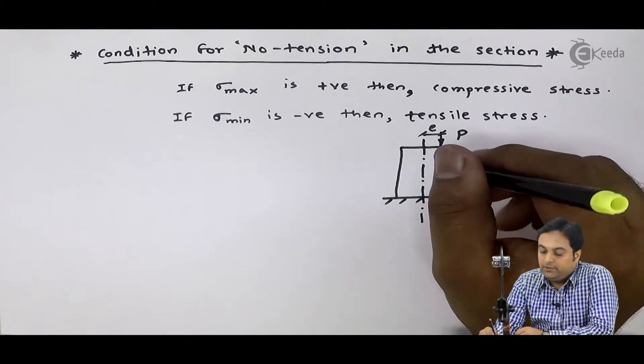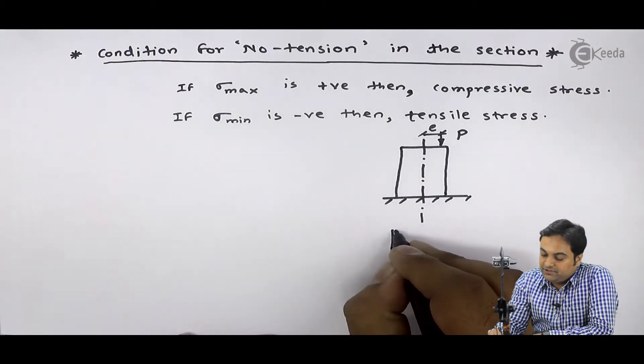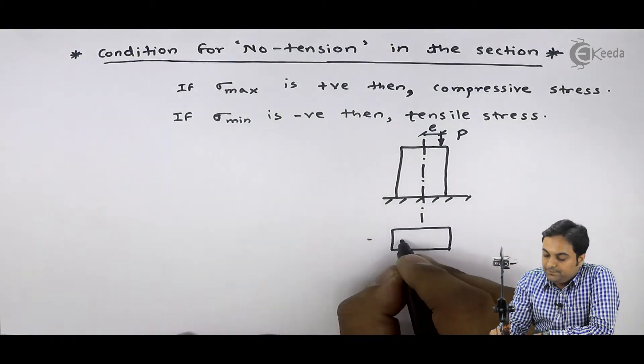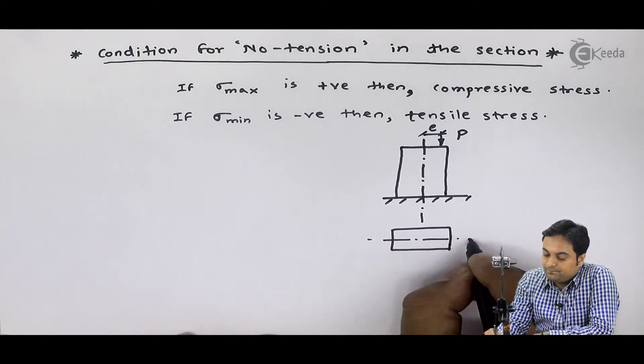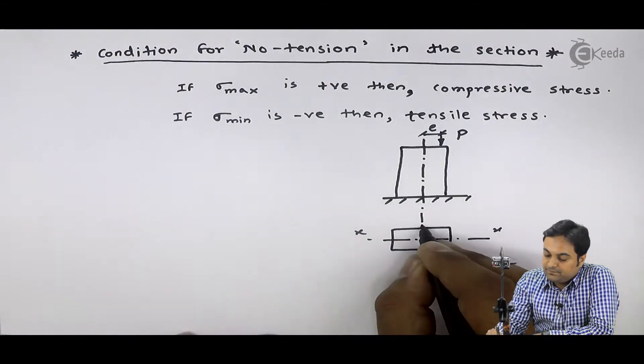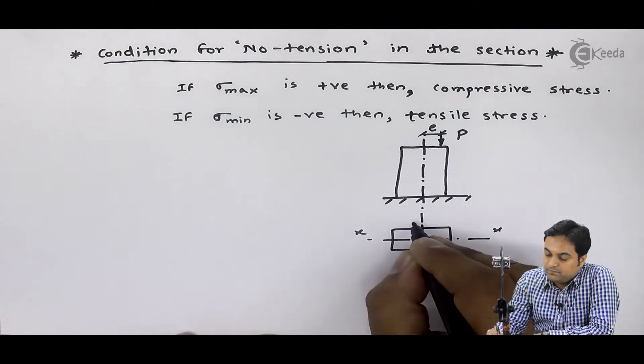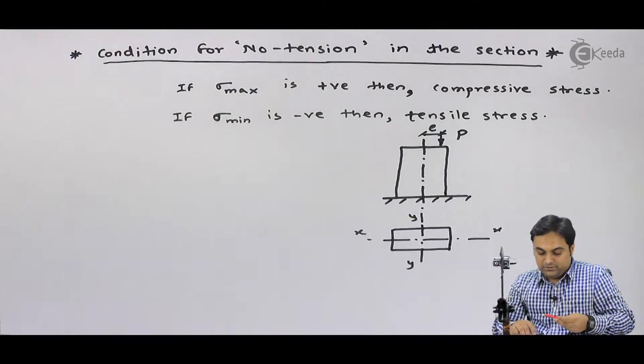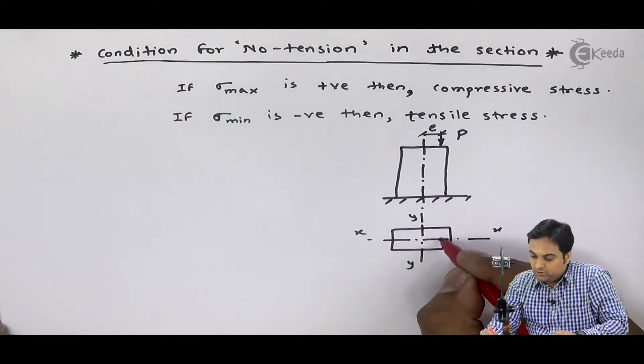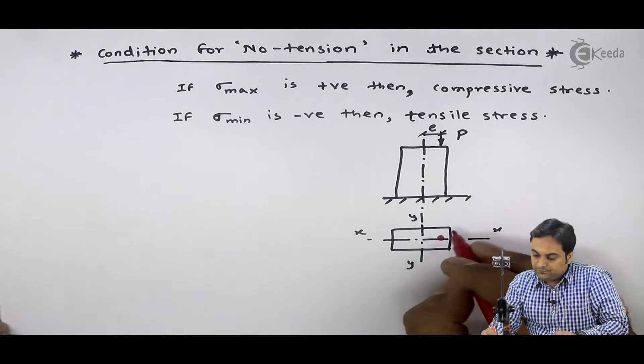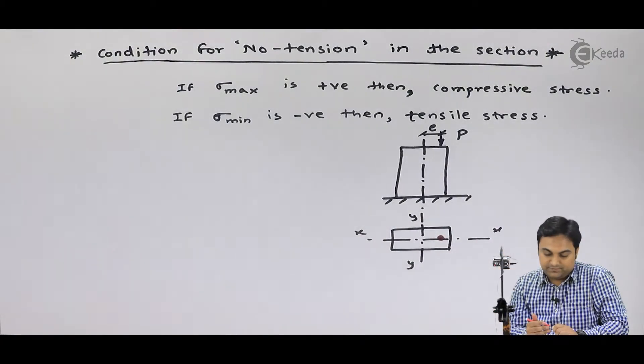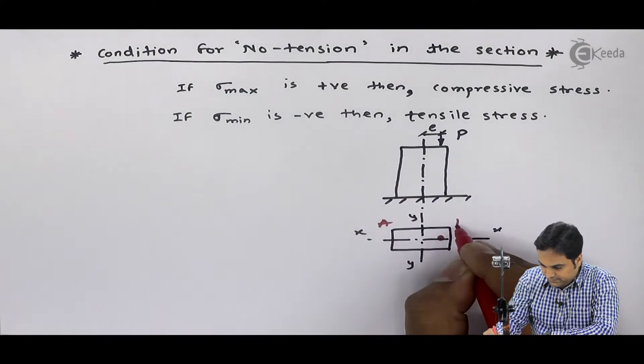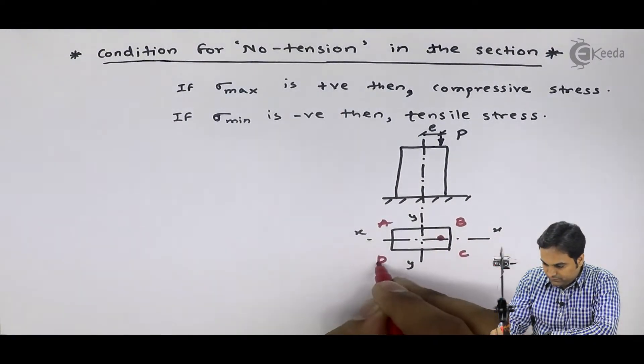If I draw the top view for this, and if I consider it as a rectangle section, then here I have x-axis, here I have y-axis. The load is along x. Now, if I give naming to this rectangle, a, b, c, d.